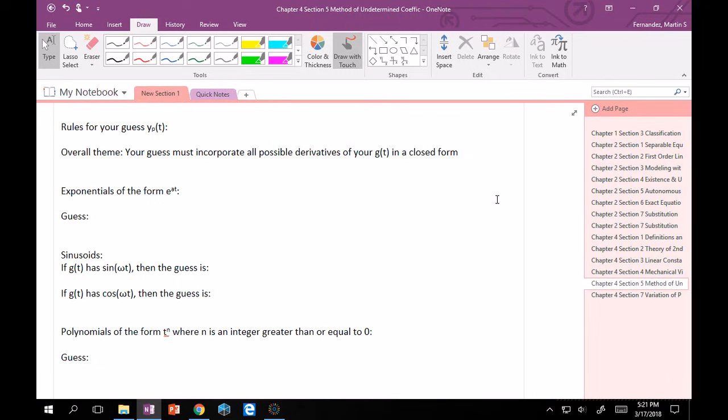So, if we have exponentials of the form e^(at), when we take derivatives of this, we're always going to get some sort of constant in the front, which is going to be, first derivative of this is just a times e^(at), second derivative is a^2 e^(at), yada, yada, yada, keep going, right? Our guess for this, therefore, is going to be some arbitrary constant A times e^(at). This incorporates all possible derivatives of this. You can keep taking derivatives. It's always just going to be a constant in the front times e^(at).